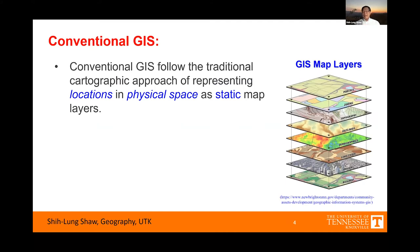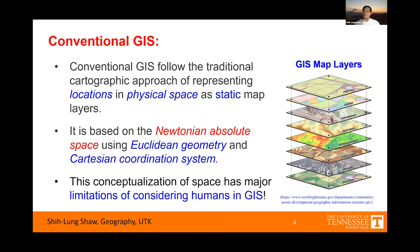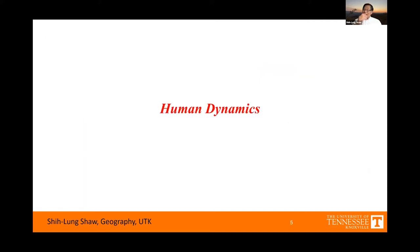If we look at conventional GIS, which we have been using for several decades, it very much follows the traditional cartographic approach — we represent locations in physical space as a static map or place, like the diagram on the right. This approach is very much based on Newton's concept of absolute space, and we have been using Euclidean geometry and the Cartesian coordinate system to implement conventional GIS. I would argue that this conceptualization of space as Newton's absolute space has major limitations if we want to handle humans in GIS.